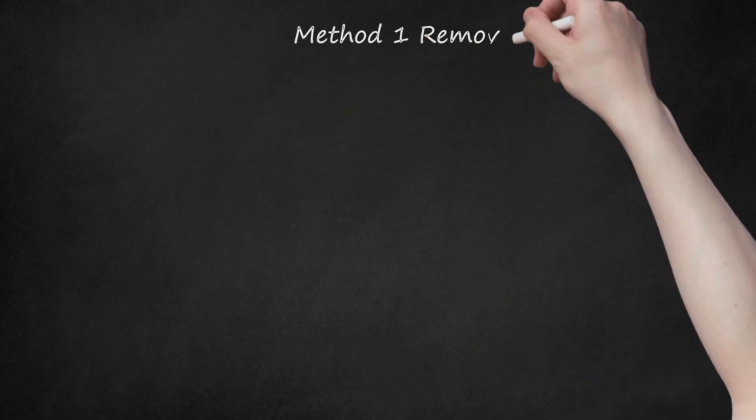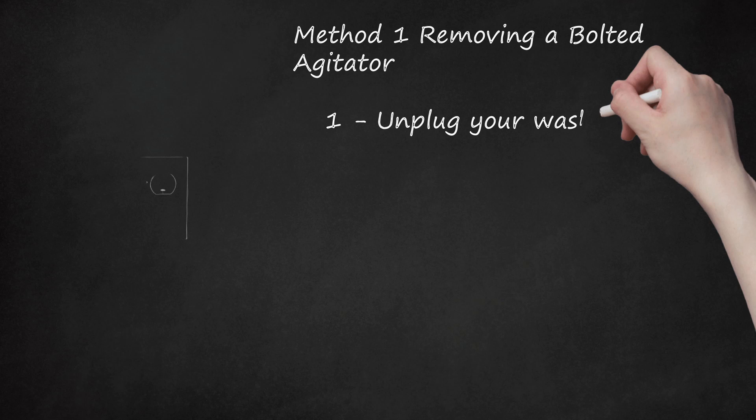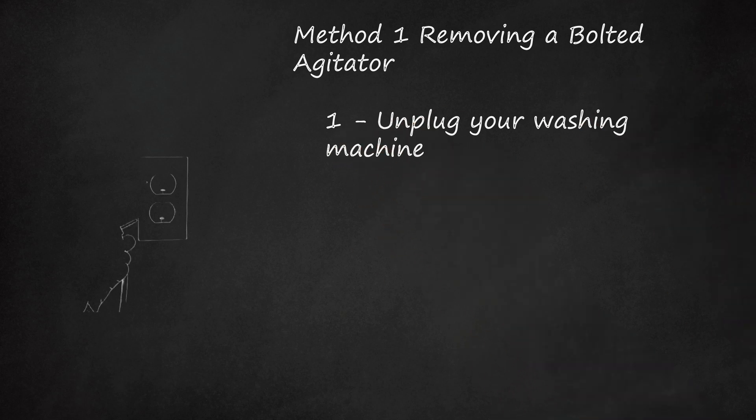Method 1: Removing a Bolted Agitator. Step 1: Unplug Your Washing Machine. Removing a washing machine's agitator is generally a simple, easy procedure with minimal risk of danger. However, accidents are possible even during the most routine acts of maintenance, so just to be safe, disconnect your washer from its power supply before beginning. Doing this ensures that you won't accidentally be shocked or injured if the on button is somehow pressed accidentally.